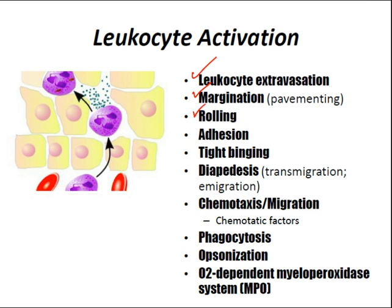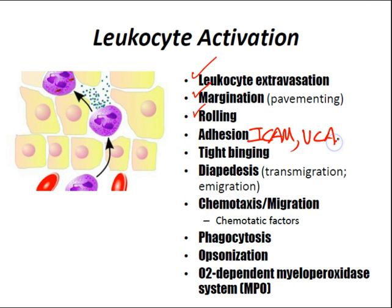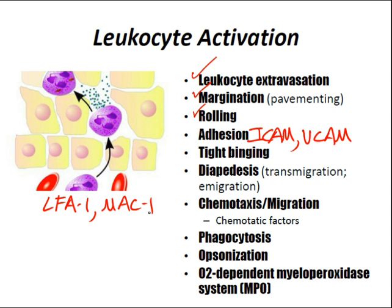Adhesion is where leukocytes adhere to the endothelial surface through adhesion molecules — ICAM and VCAM — on endothelial cell surfaces, and integrins such as LFA-1 and MAC-1 on leukocytes. Interleukin-1 and TNF activate ICAM and VCAM on the endothelium. C5A and leukotriene B4 activate leukocyte adhesion molecules.